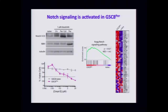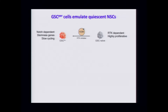Notch signaling is activated in the persisters — you can do Western blots to stain for the active form of notch and see old gene expression signatures associated with notch signaling. The persister cells, but not the naive cells, are very sensitive to gamma secretase inhibitors, which target notch signaling. We think this may be emulated in glioblastoma.